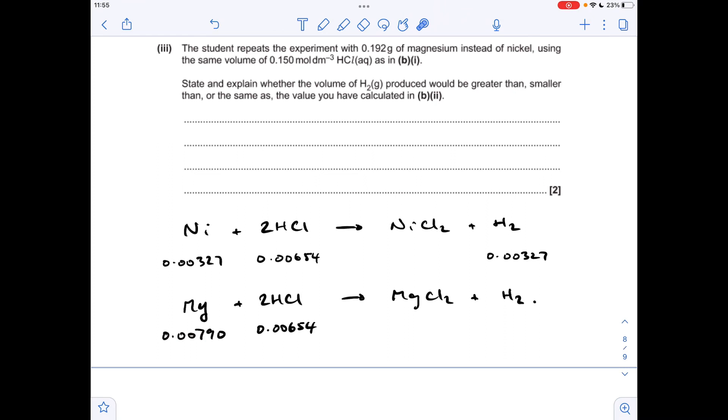Because we're using the same mass but it's got a lower MR. So for these to all react we're actually going to need twice as many moles of HCl. So we're going to need 0.0158 moles of HCl for all of them to react.